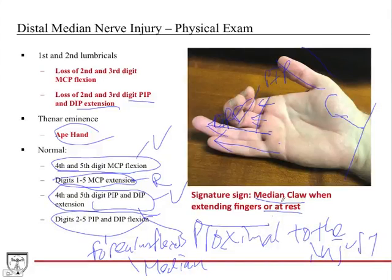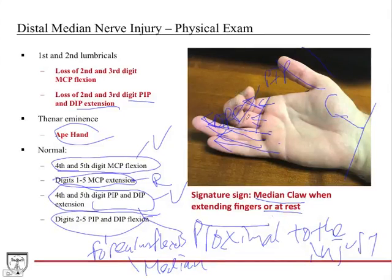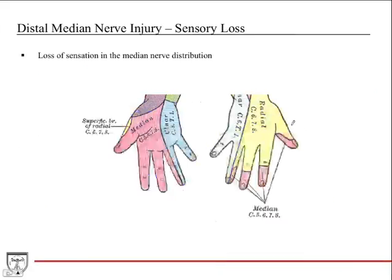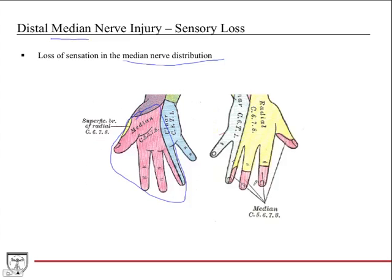When the hand is at rest, you're just letting your fingers relax. The fourth and fifth digits extend out normally, but digits two and three aren't able to relax because there's no counterbalance — the flexion forces at the PIP and DIP joints are acting unopposed. The sensory loss in this patient follows median nerve distribution: the first three and a half fingers on the palmar aspect and the fingertips on the dorsal aspect.